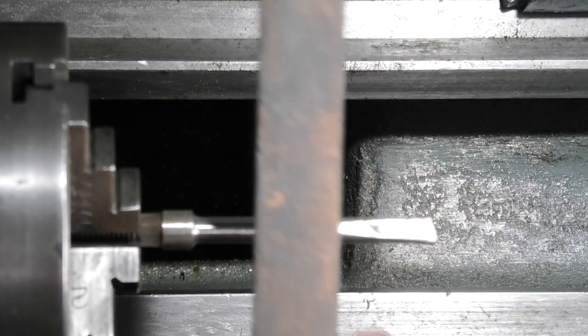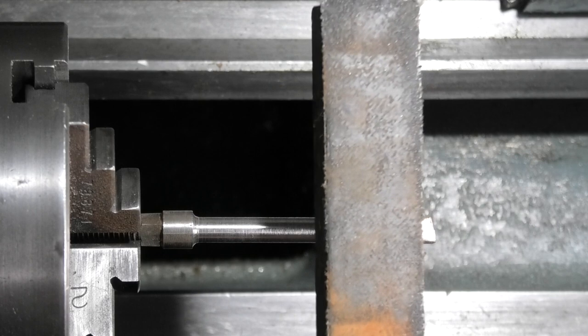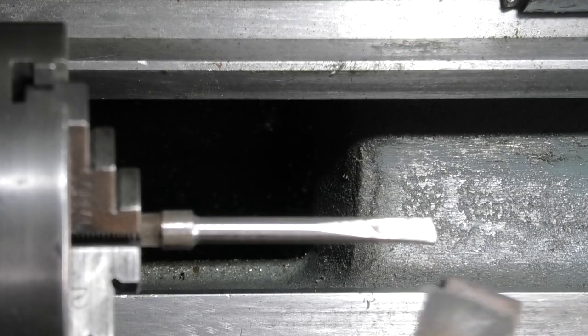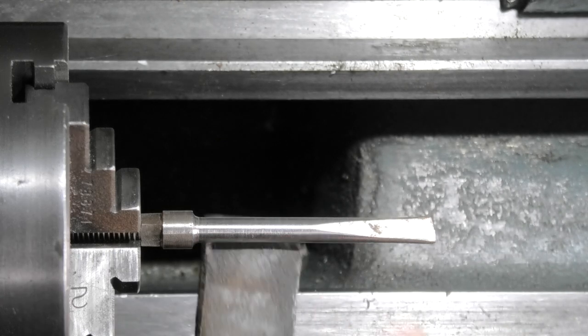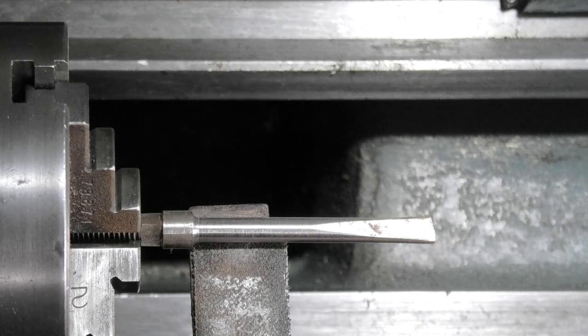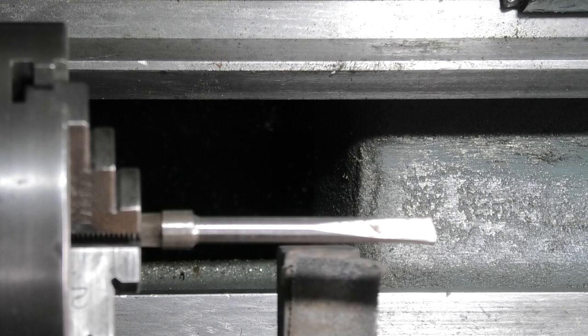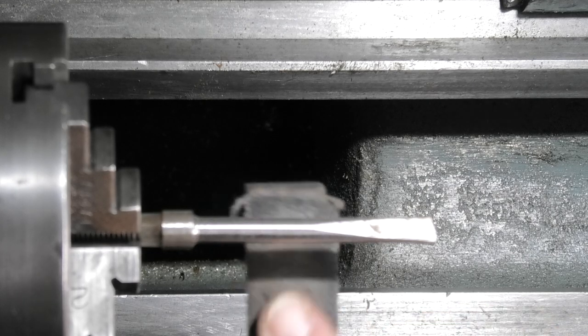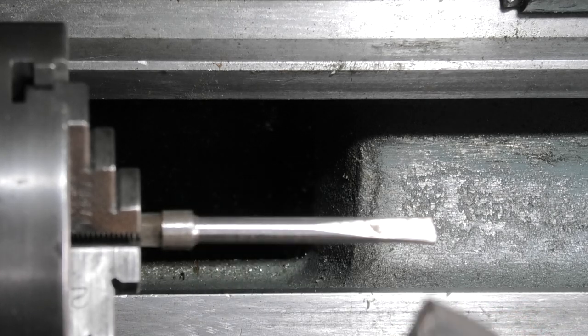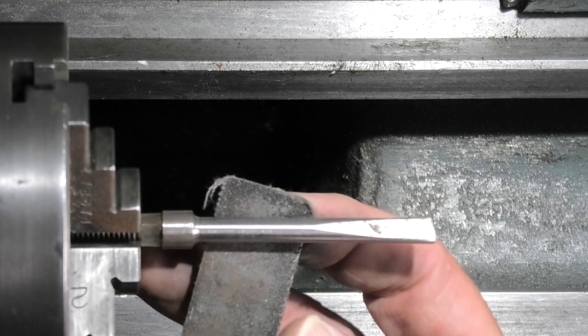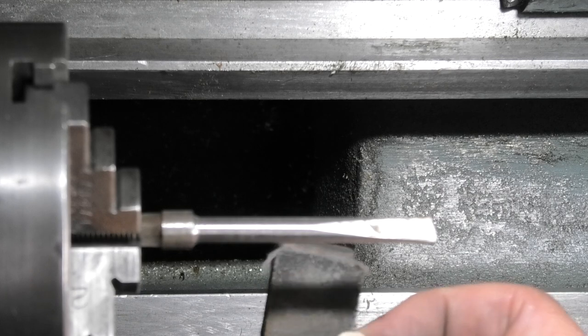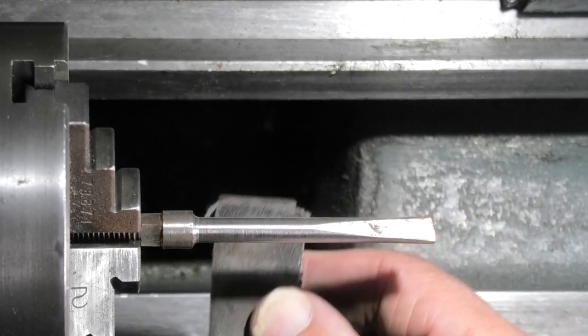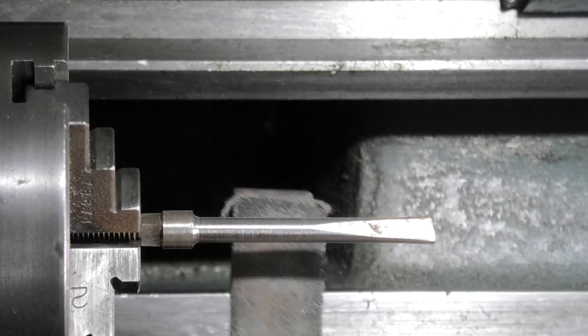This backing stick I'm using with the emery cloth lets me get more pressure onto the workpiece. I can use the emery cloth right up to the end. The other advantage is it gives you a flat back, because when you're using your fingers, you have the curve of your fingers. This gives you a flat surface, so you can use the whole width of the emery.